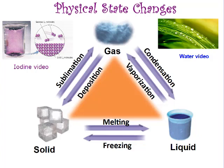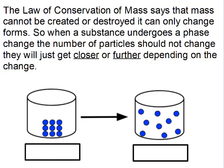Those are the six phase changes you need to know. The law of conservation of mass says that mass cannot be created or destroyed — it can only change forms. So when a substance undergoes a phase change, the number of particles should not change; they're just going to get closer or further apart. In a closed container, you'll start with the same number of particles before and after the change.